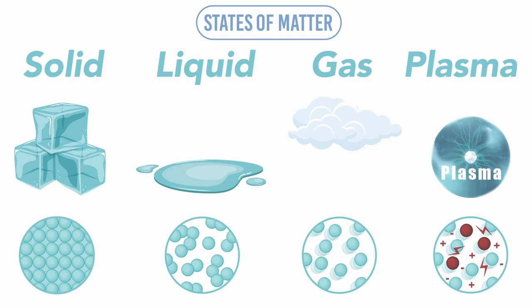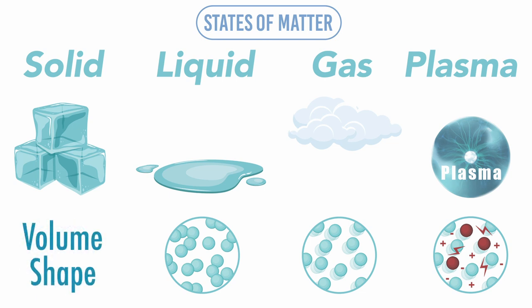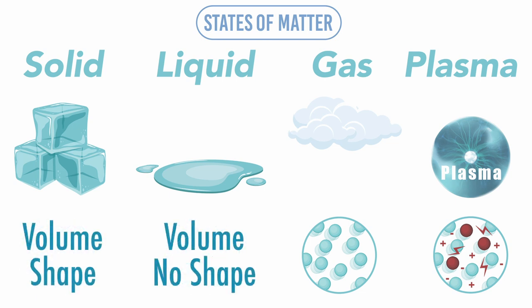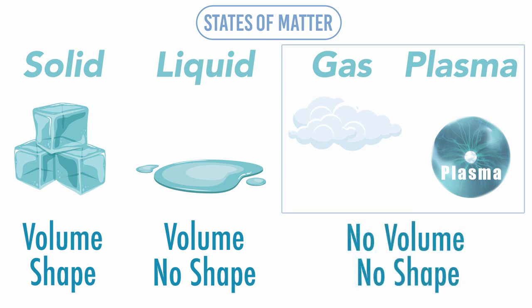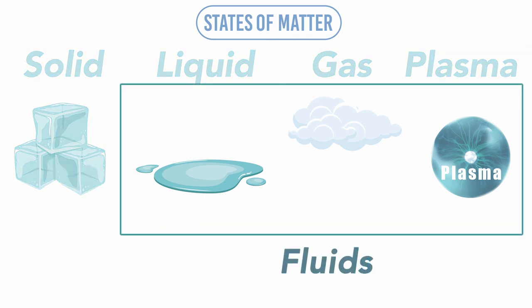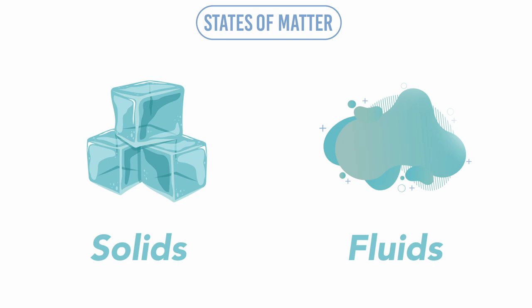Solids can be defined as materials having both fixed volume and shape, liquids as having fixed volume but no shape, and gases and plasma as having neither fixed volume nor shape. Gases, liquids, and plasma are also known as fluids because they naturally flow easily. For simplicity in discussing basic rheology, we'll just divide matter into solids and fluids.